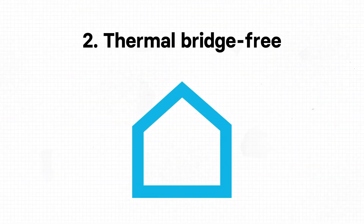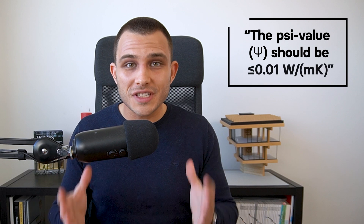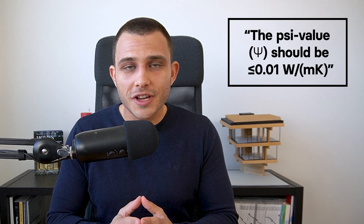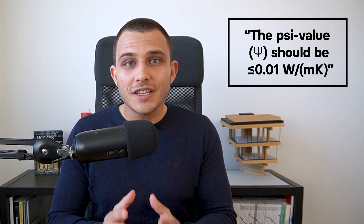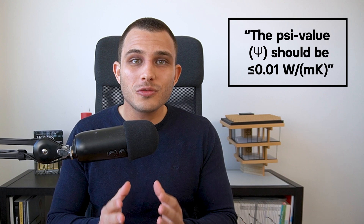The second principle is thermal bridge free design. Thermal bridges are the weak spots in our insulation layer — wherever the insulation layer is interrupted or another material goes through it, these details should be optimized. Thermal bridges are measured with the Psi value, and to have a thermal bridge free construction, this value should be less than or equal to 0.01 watts per meter kelvin.